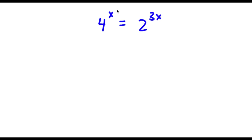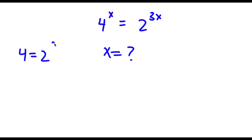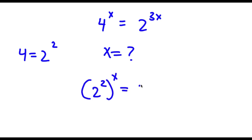Alright, so I have 4 to the power of x is equal to 2 to the power of 3x. I want to find the value of x here. Now first off, 4 is the same thing as 2 to the power of 2. So if I replace 4 with 2 to the power of 2, I get 2 to the power of 2 to the power of x is equal to 2 to the power of 3x.